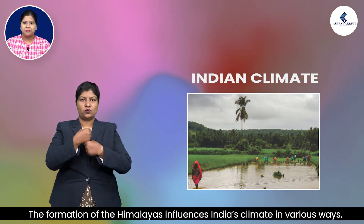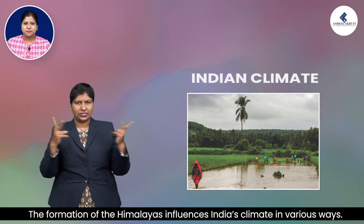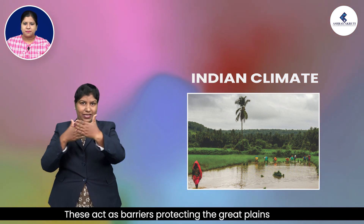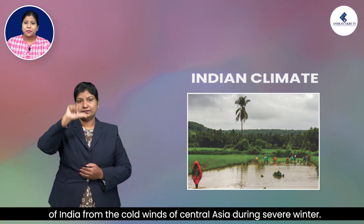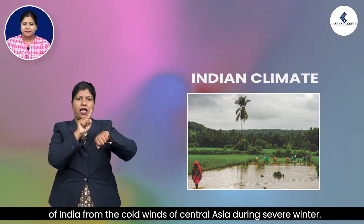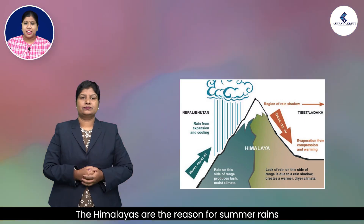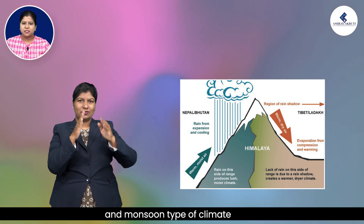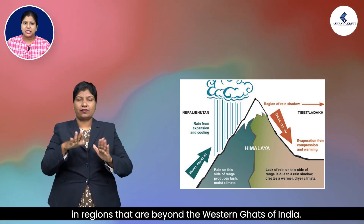The formation of the Himalayas influences India's climate in various ways. They act as barriers, protecting the Great Plains of India from the cold winds of Central Asia during severe winter. The Himalayas are also the reason for summer rains and monsoon type of climate in regions beyond the Western Ghats of India.